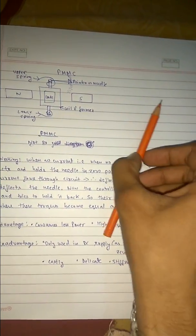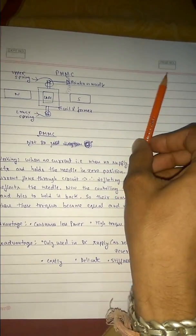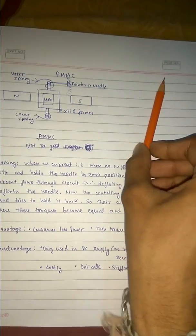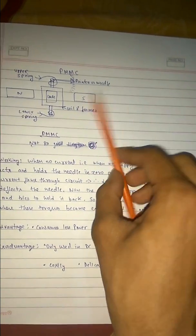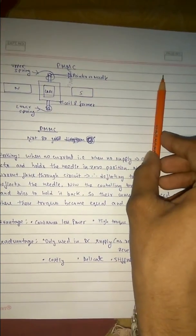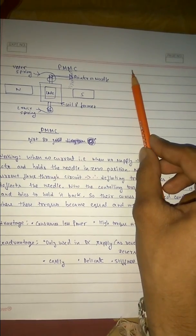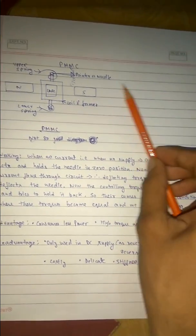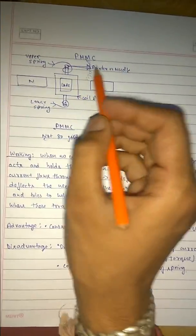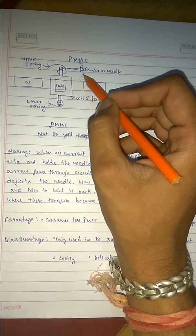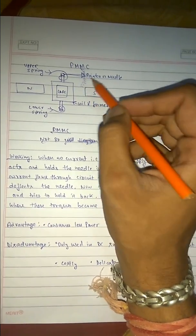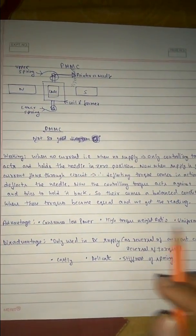As it is deflecting, the controlling torque will also act — it will try to pull back the spring. The needle is deflecting, so the controlling torque is trying to get it back to the original position. In this process of deflection and controlling, there will come a condition when both torques will be equal. That equal position is the point when we take our readings. So the pointer deflects and when it stands still at a point, at that point we take our reading.